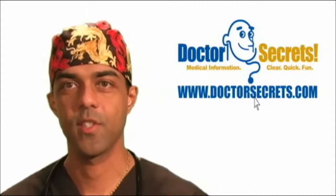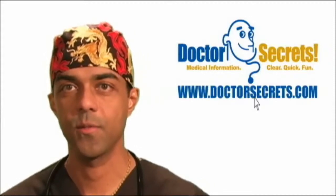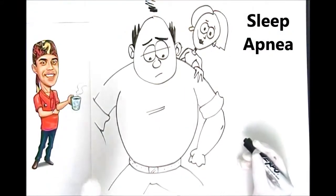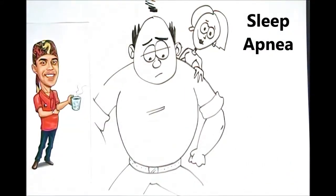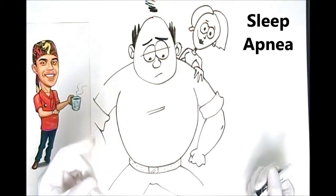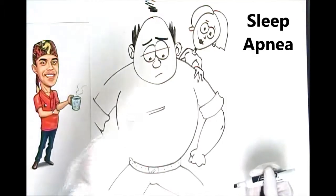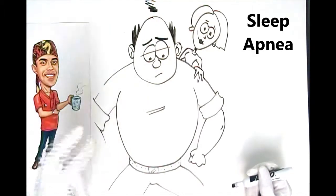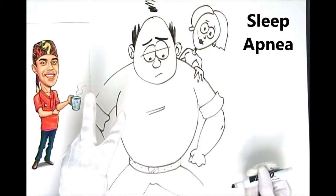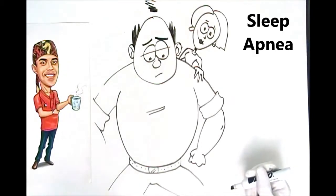Hi, welcome to drsecrets.com. I'm DR, and today we're going to talk about sleep apnea. There are two different types: central sleep apnea, which is a neurological problem where there's a lack of respiratory drive while someone is sleeping, and obstructive sleep apnea, or OSA, which is far more common and is what I'm covering in this video.